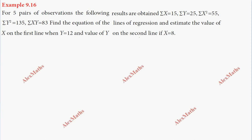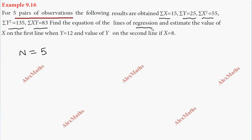Hi students, this is Alex here. In this problem, we have five pairs of observations. We are given n equals 5, sigma X, sigma Y, sigma X square, sigma Y square, and sigma XY. We need to find the equations of the lines of regression and estimate the values.